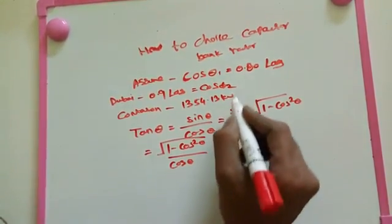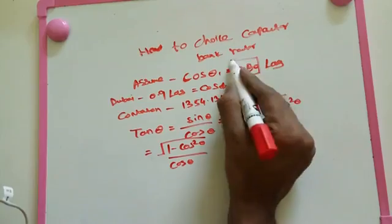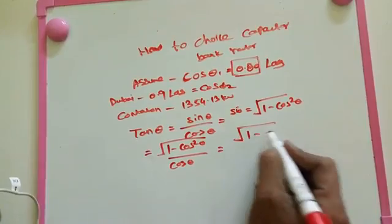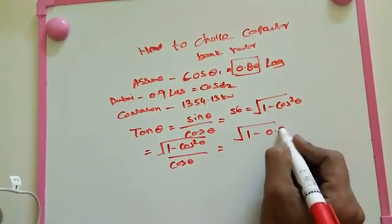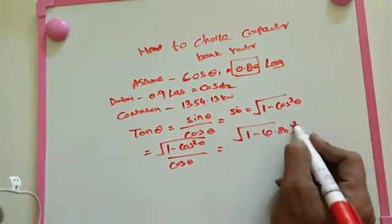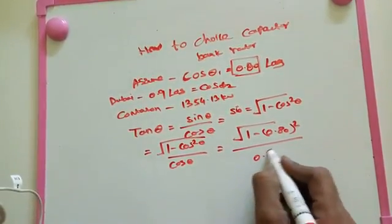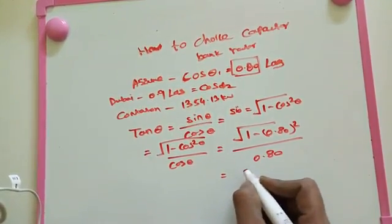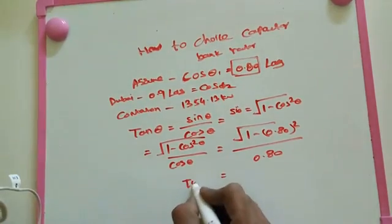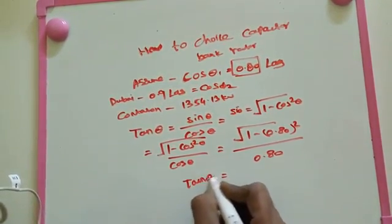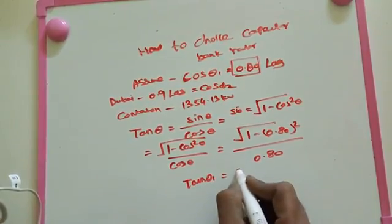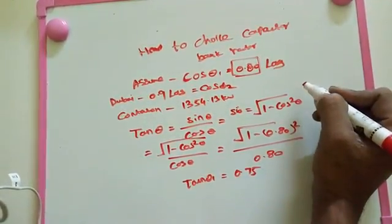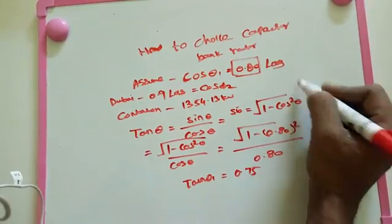Here we take cos theta as 0.80, so square root of 1 minus 0.80 squared divided by 0.80. We got tan theta 1 is 0.75. This is for the lagging power factor we have.